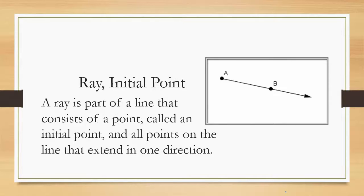Ray, initial point. A ray is part of a line that consists of a point called an initial point and all points on the line that extend in one direction. So this is a picture of a ray. Here is my initial point, that's where my ray starts and then it just goes down here. This arrow shows that this ray goes on forever and ever and ever. The notation used to show a ray is the endpoints and above it is an arrow that only has one head where the arrow starts at the initial point and goes towards the endpoint.